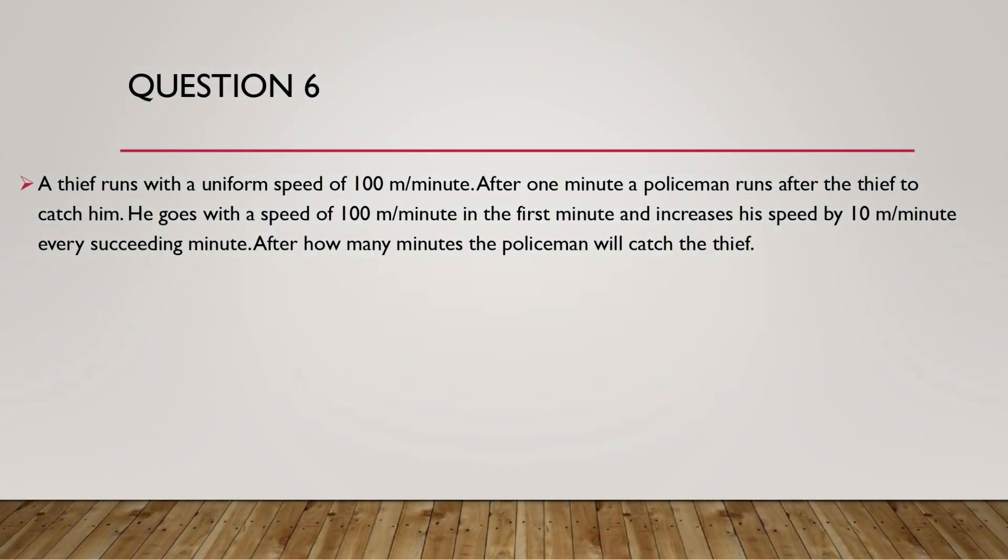Question 6. A thief runs with a uniform speed of 100 meters per minute. After 1 minute, a policeman runs after the thief to catch him. He goes with a speed of 100 meters per minute in the first minute, then increases his speed by 10 meters per minute every succeeding minute. After how many minutes will the policeman catch the thief?